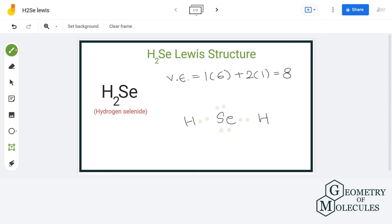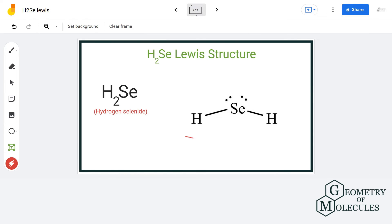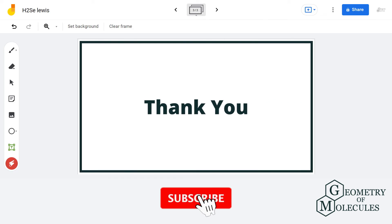And we have four more left, so this is the final Lewis structure of H2Se in which every atom has complete outer shell and zero formal charge. For more such videos make sure to subscribe our channel and thank you for watching.